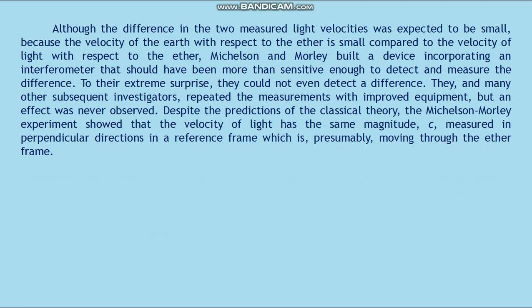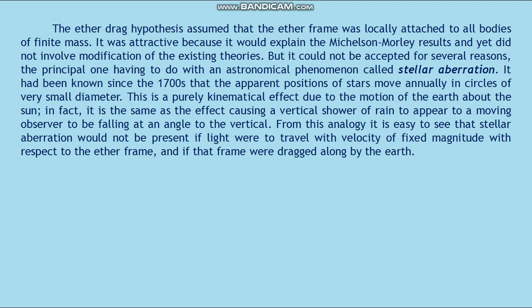To the extreme surprise of everyone, they could not even detect a difference. They and many subsequent investigators repeated the measurement with improved equipment, but the effect was never found. The Michelson-Morley experiment showed that the velocity of light has the same magnitude c measured in perpendicular directions in a reference frame which is moving through the ether frame. The hypothesis that the ether frame was locally attached to all bodies of finite mass was considered because it would explain the Michelson-Morley result and yet did not involve modification of the existing theories. But it could not be accepted for several reasons, the principal one having to do with the astronomical phenomenon called stellar aberration.